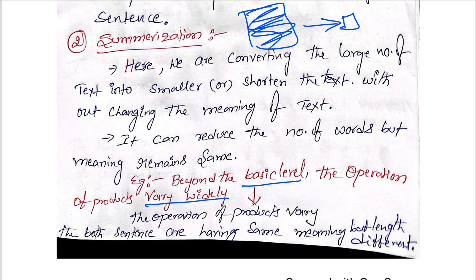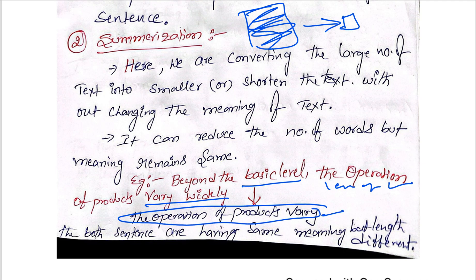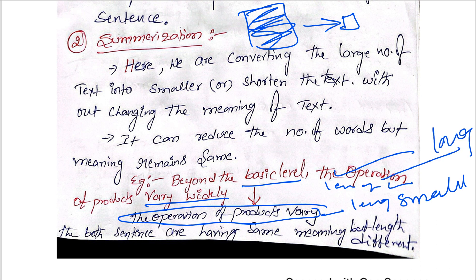Consider a simple example: 'Beyond the basic level, the operation of products vary widely.' This sentence is quite long. The same sentence can be written as: 'The operation of products vary.' The length of words is much smaller, but the meaning of both sentences is the same — one is long and one is short.